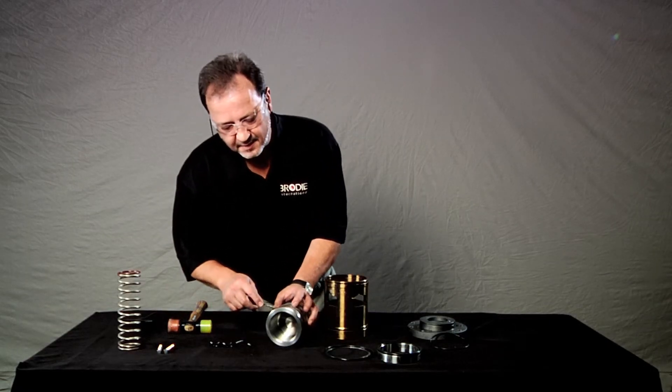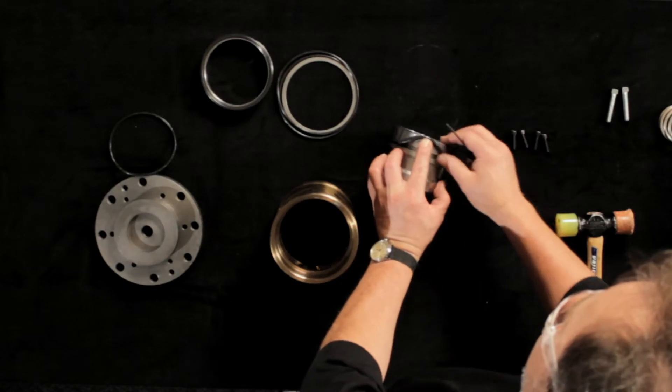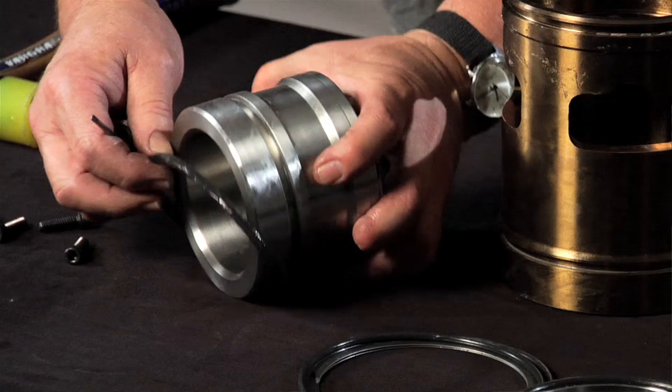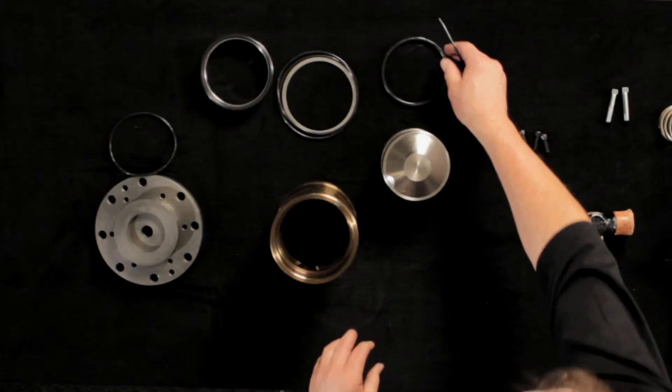Finally, remove the o-ring from the piston. The disassembly is complete.